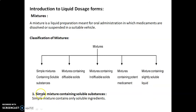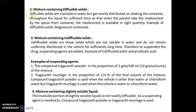The first class is a simple mixture containing soluble substances — a simple mixture contains only soluble ingredients. The second type is mixtures containing diffusible solids. Diffusible solids are insoluble in water but get evenly distributed on shaking the container throughout the liquid for sufficient time, so that when the patient takes the medicament by the spoon from the container, the medicament is available in the right quantity. An example of diffusible solids is magnesium carbonate.